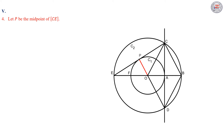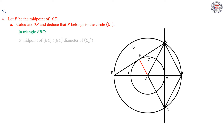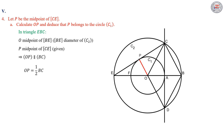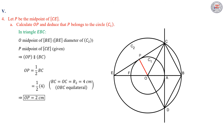Part 4. Let P be the midpoint of CE. In part A, we have to calculate OP and deduce that P belongs to the circle C1. In triangle EBC, we have O as the midpoint of BE since BE is a diameter of the circle C2, and P is the midpoint of CE from the given. Then we can deduce that OP is parallel to BC and OP equal half BC from the mid-segment theorem in triangle EBC. Therefore, OP is equal to one half times 4, since BC equal OC equal R2 equal 4 cm since triangle OBC is equilateral. Therefore, OP equal 2 centimeters.